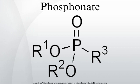Michaelis-Arbuzov reaction: for example, methyl iodide catalyzes the conversion of trimethyl phosphite to the phosphonate ester dimethyl methylphosphonate P(O)(CH3)(OCH3)2. The diester is first deprotonated and the resulting anion is alkylated.